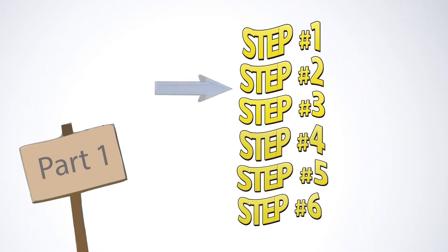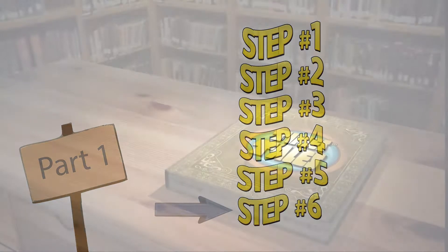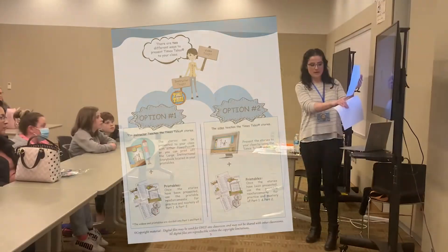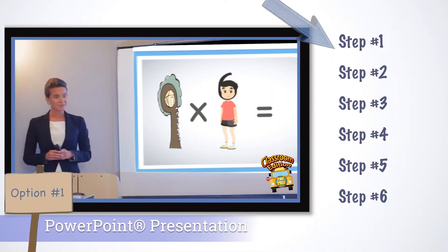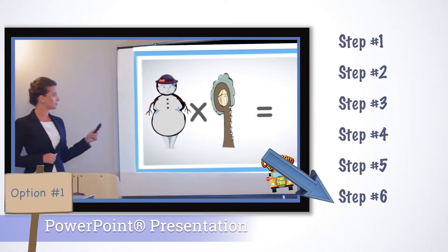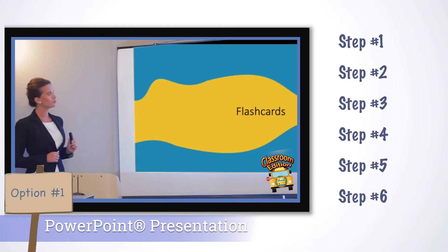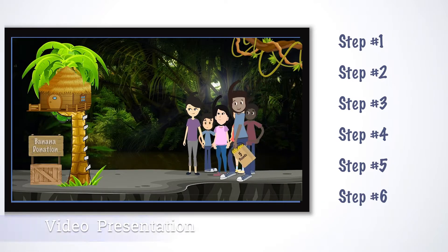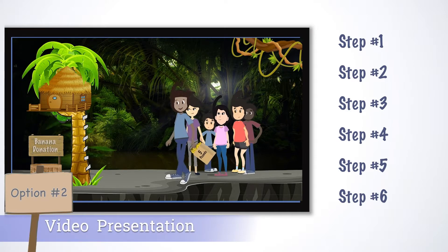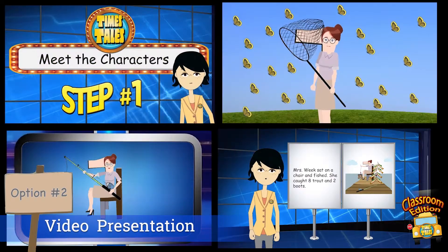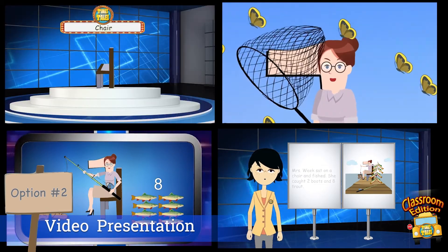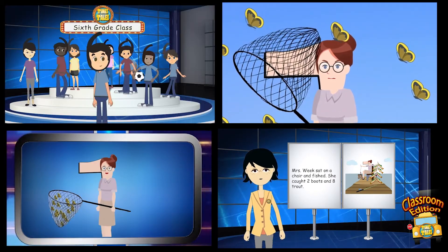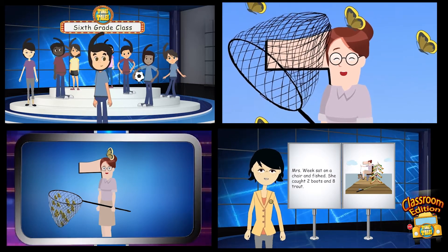The Times Tales method is based upon a six-step process. There are a few different ways that you can present these six steps to your class. The program can be presented by utilizing the PowerPoint slides, or the students can be led through each step by watching the video. If you choose to have the video teach the program, start by playing part one of the classroom edition. Hannah, the host, will guide the students through all six steps of the program.